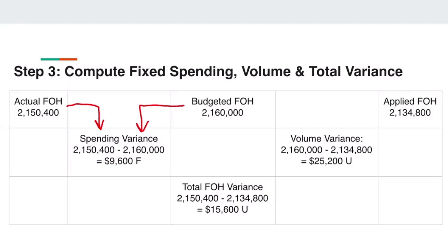To find volume variance, subtract budgeted by applied fixed overhead. This gives $25,200U. Since it is positive, it is unfavorable, so we place a U beside it.